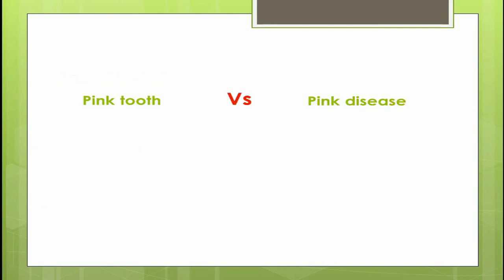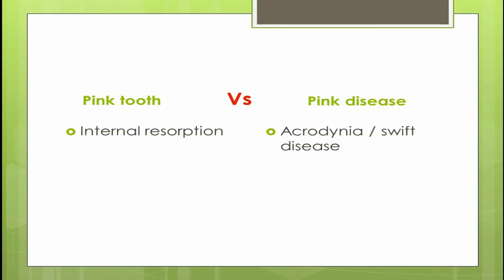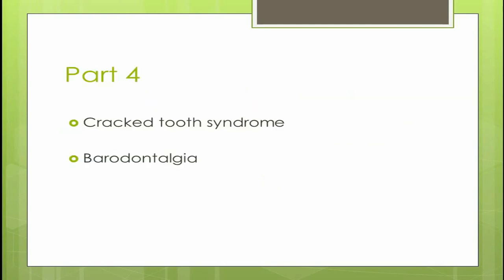Note that pink tooth and pink disease are two different entities. Pink tooth is internal resorption, whereas pink disease is also called acrodynia or Swift disease, and it is caused by mercury poisoning. In the next video we will discuss crack tooth syndrome and barodontalgia. Thank you.